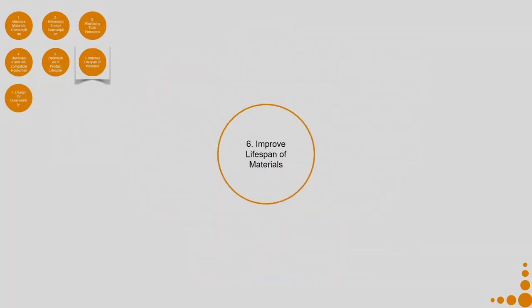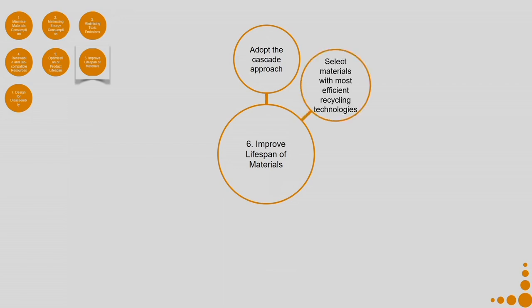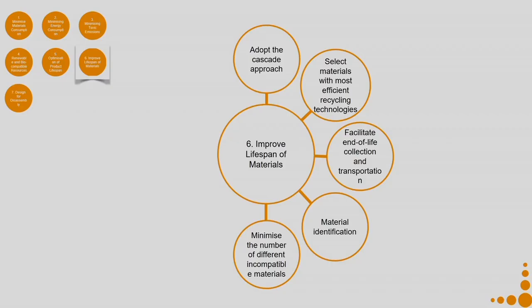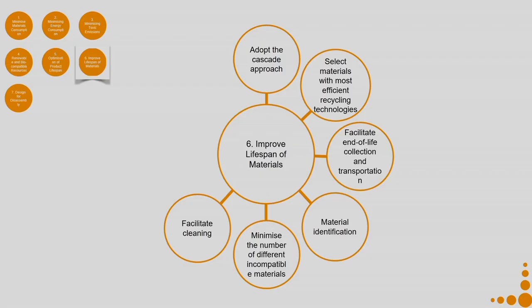Now coming to the sixth aspect — improve lifespan of materials. Under this category we can adopt the cascading approach, select materials with the most efficient recycling technologies, facilitate end-of-life collection and transportation, and ensure material identification is possible. If I do not know what a material is, I do not know how to properly handle its end of life. Minimize the number of different incompatible materials — if there are too many incompatible materials such as paper joined to plastic joined to aluminum foil, they are incompatible at end of life, so we must try to avoid such combinations.